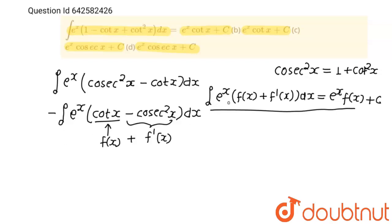So now, here you can see, this formula is e to the power x into f x, so minus sign will be there. The integration will be e to the power x into f x and f x is cot x plus c.